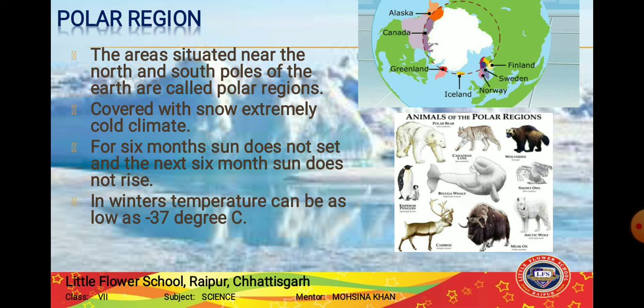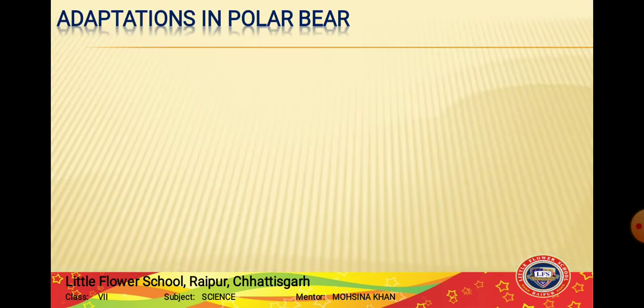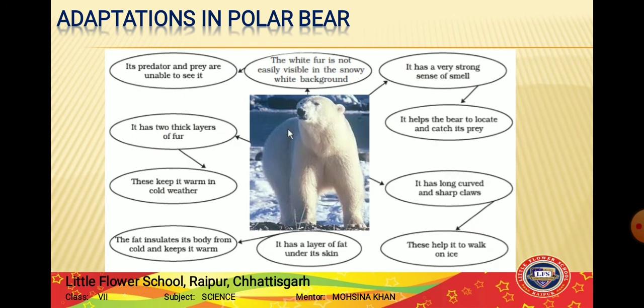Let us see how animals are adapted in polar regions. We will take the example of polar bears and penguins to understand what features in their bodies allow them to survive in such cold climates. Polar bears are perfectly adapted to live in the ice-cold environment of the Arctic polar region, which is at the North Pole.